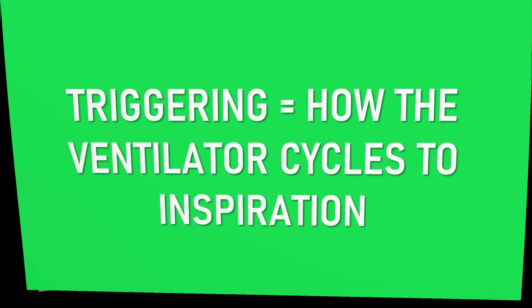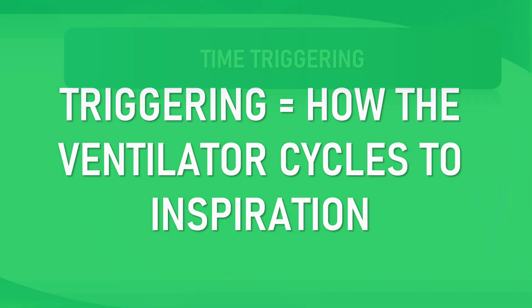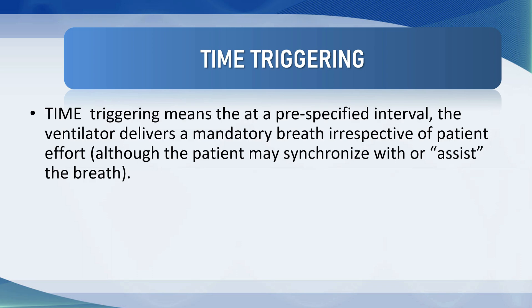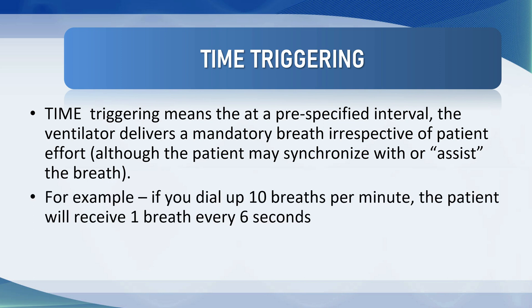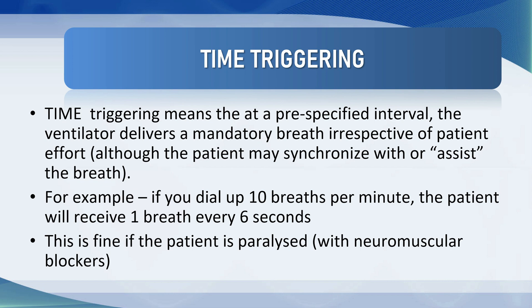Triggering is how the ventilator cycles to inspiration. On control mechanical ventilation, triggering of the mandatory breath is always based on time. Time triggering means that at a pre-specified interval the ventilator delivers a mandatory breath irrespective of patient effort. For example, if you dial up 10 breaths per minute the patient will receive a breath every six seconds. This is appropriate if the patient is paralyzed, for example under neuromuscular blockade particularly in the operating room.